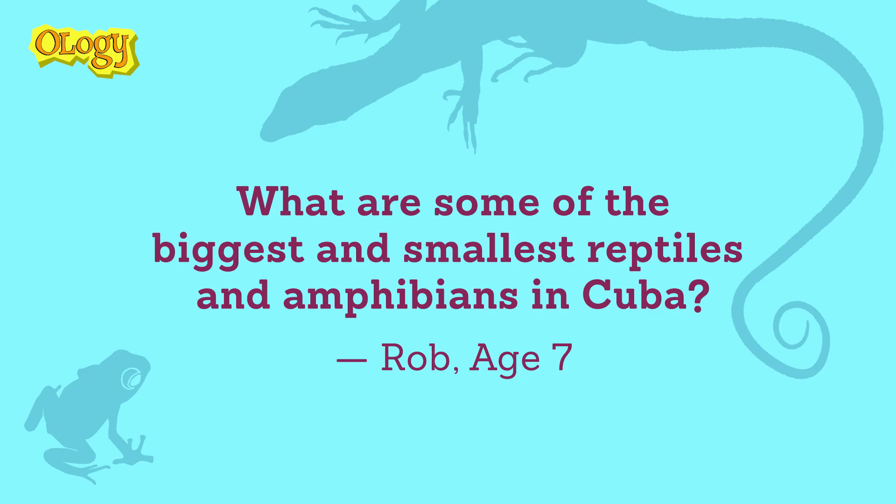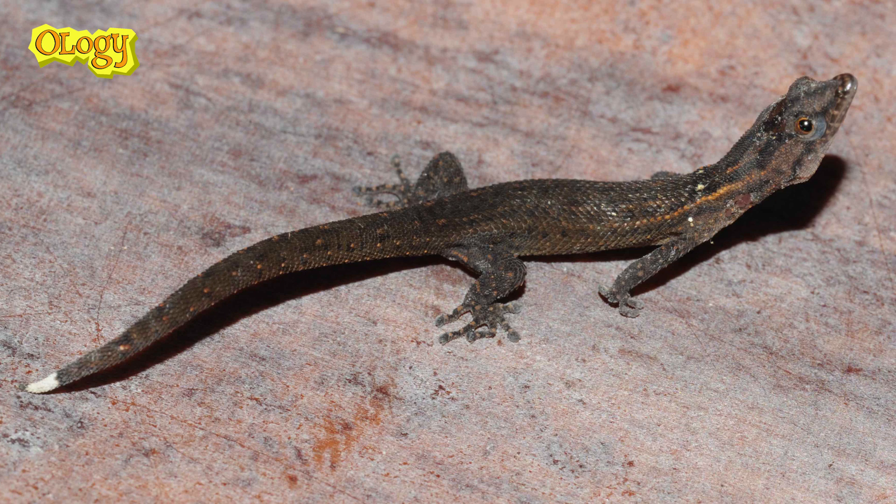What are some of the biggest and smallest reptiles and amphibians in Cuba? Some of the smallest reptiles in Cuba are these tiny geckos — they're not much bigger than a fingernail. You find them in leaf litter; sometimes they have a little white spot on the end of their tail. They're adapted for living amongst leaf litter, and when you first see them, you might think it's an insect running around.